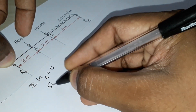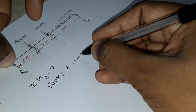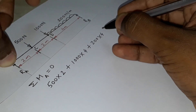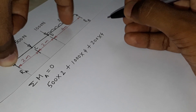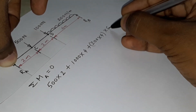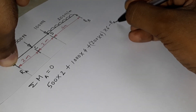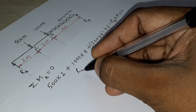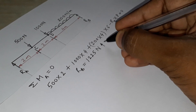Taking moments about A: 500 into 2 is clockwise (positive), 1000 into 4 is clockwise (positive), 200 into 4 (total UDL load) is clockwise and acts at the center of the 4-meter span, so its distance from A is 2 plus 2 plus 2 equals 6 meters. RB acts upward giving an anti-clockwise moment, so minus RB into 8 equals zero. Solving, RB equals 1225 Newton and is positive, confirming the assumed direction.